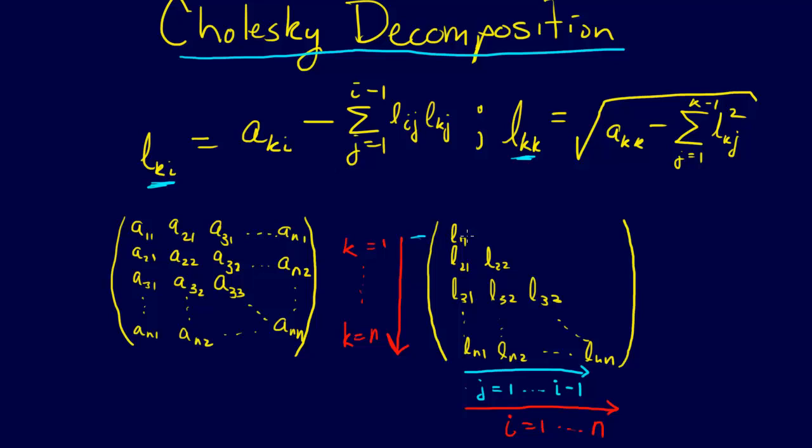And so first we'll do the L_11 element. Then we're going to start on row 2, and we'll do these elements. We start, then we go to row 3, and we do these. Then we go to row 4. So, this is how this L matrix is populated as we go through. First here, and then here, and then here.